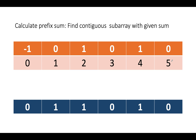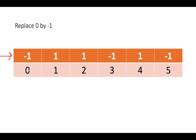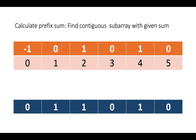Next, I calculate the prefix sum as I iterate through this array. Starting from -1, then adding 1 gives 0. Then adding 1 gives 1. Then adding -1 gives 0. Then adding 1 gives 1. Then adding -1 gives 0. So the prefix sum array is [-1, 0, 1, 0, 1, 0].